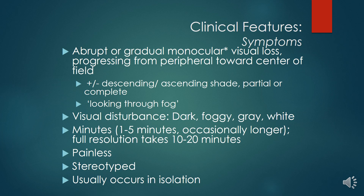Clinical features include abrupt or gradual monocular visual loss progressing from peripheral towards the center of the visual field, with a descending or ascending shade, partial or complete. Patients describe looking through fog, with visual disturbance described as dark, foggy, grey, or white, lasting 1–5 minutes and occasionally longer. Full resolution typically takes 10–20 minutes. Episodes are usually painless, stereotyped, and occur in isolation.